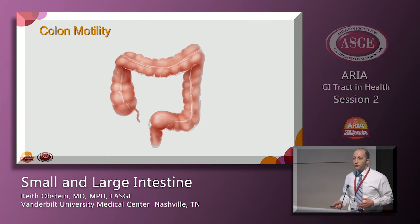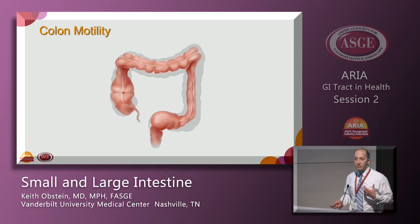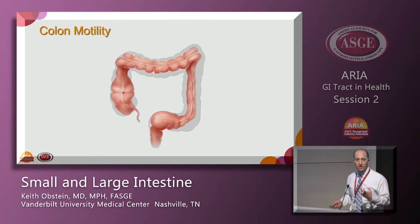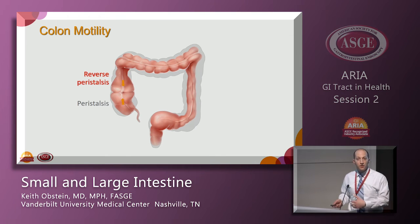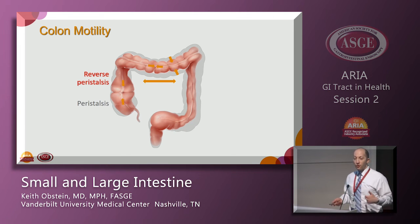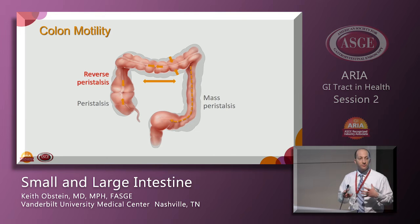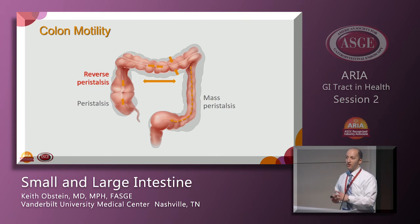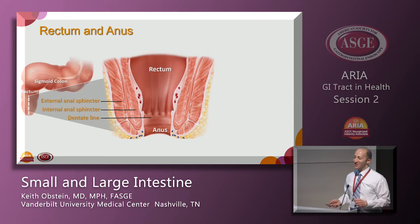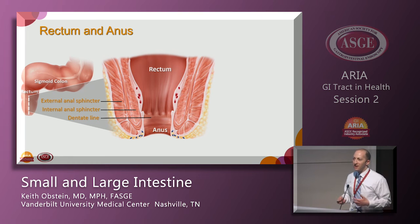The colon moves via peristalsis — it can contract and relax to get water absorbed and prepare the bolus to make feces. On the right side there's both forward and reverse peristalsis, so material moves back and forth while absorption occurs. Across the transverse colon it happens to a lesser extent. Finally, as the bolus forms, mass peristalsis moves it along to the rectum.